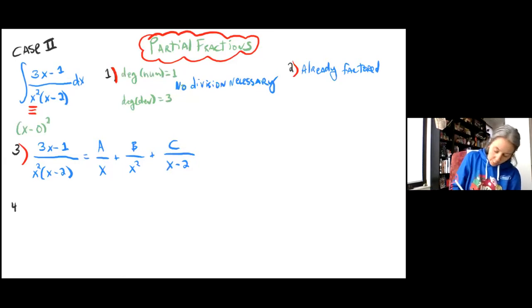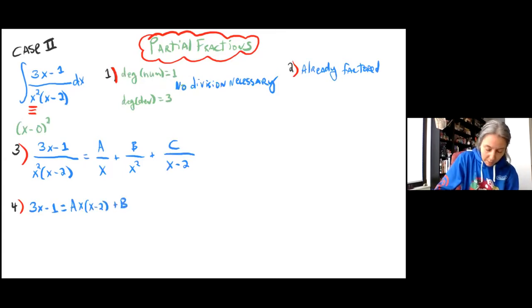Now for step 4, we want to solve for A, B, and C. We want to solve for those numerators. So we're going to start off by multiplying that x squared times x minus 2 over to the other side. So we'll end up with 3x minus 1 is equal to A, one of the x's cancels out, which means there's 1x left over, and the x minus 2, plus B. Both of the x's canceled out, x squared gone, and we just have x minus 2 left. Plus C, only the x minus 2 cancels out, so we have x squared left.